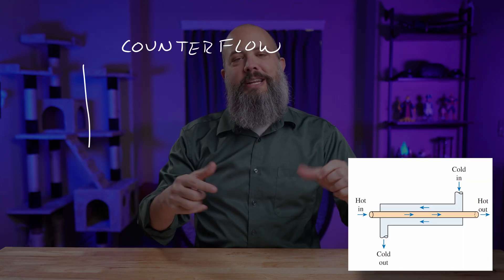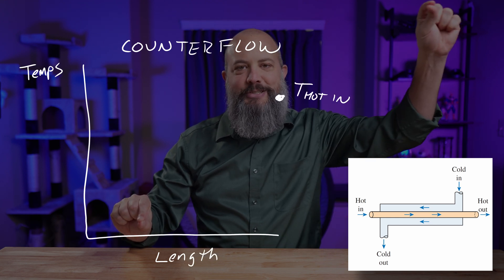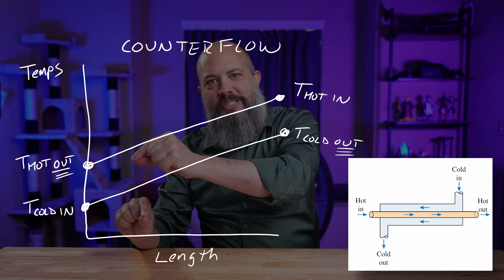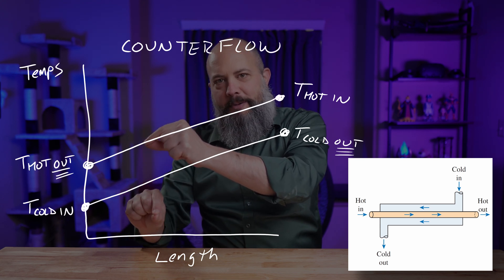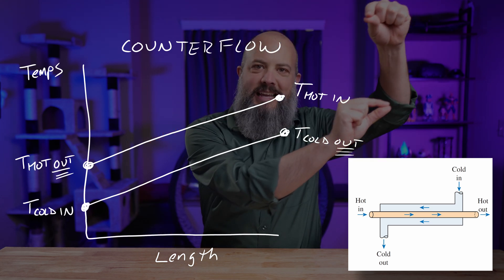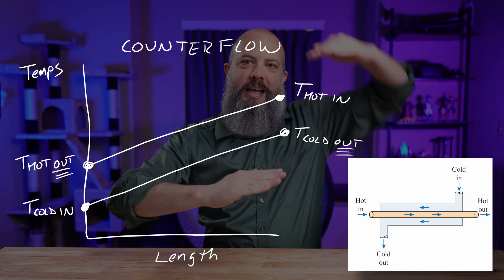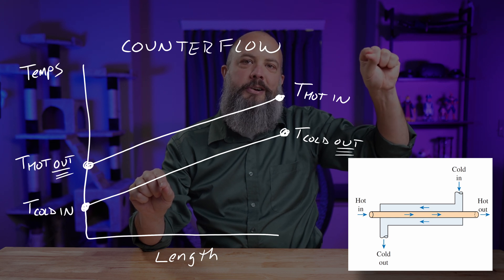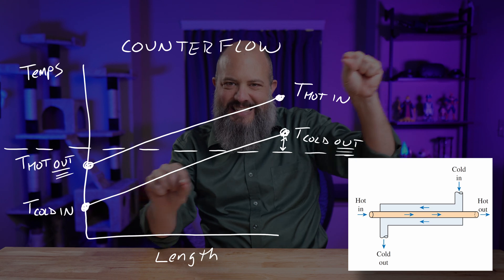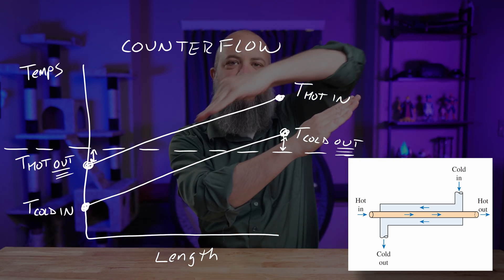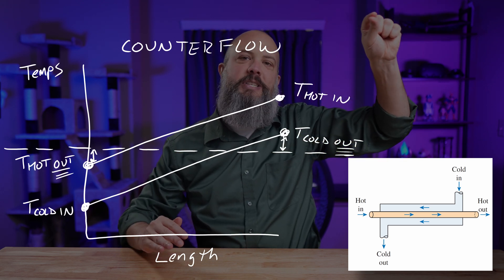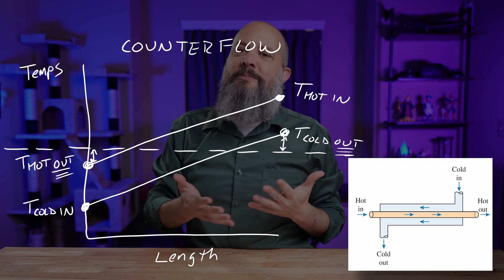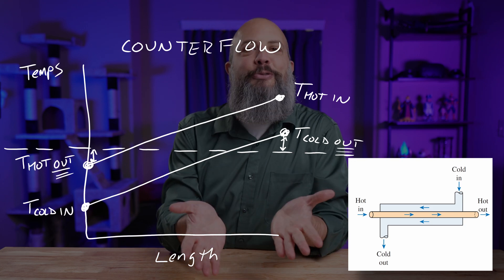But now consider a counter flow heat exchanger. You have cold water entering one side, hot steam entering the other side. The longer the heat exchanger is, the more the steam can cool off, and it only needs to be at the exit of steam warmer than the inlet of the water. However, as these two flows are passing each other, it is possible for the outlet flow of the water to be warmer than the outlet flow of the steam. That is actually possible as the water heats up and the steam cools down because you have the hottest part of the steam at the same place where the hottest part of the water is and the coldest steam near the coldest water. And so this is why you can sometimes get more efficient heat exchange out of a counter flow heat exchanger.